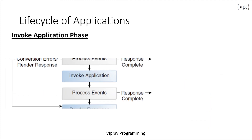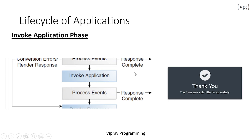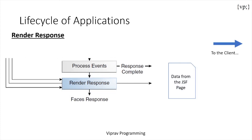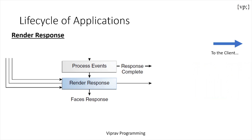Then there is the invoke application step, which handles application-level events like submitting a form or sending a link. Finally, there is the render response step. This is when JSF builds the view and sends authority to another resource to take care of the rendering of the pages. The state of the response is then saved to be available in the restore view phase.